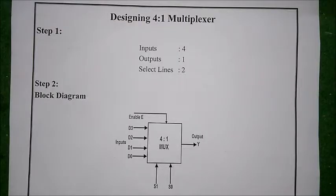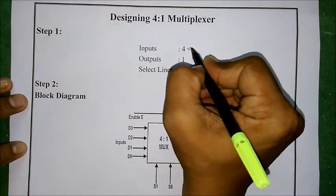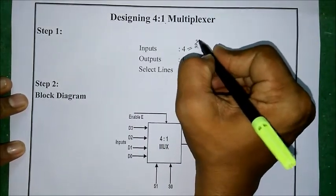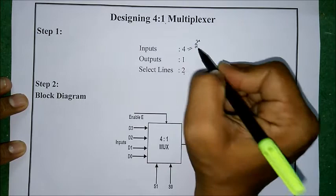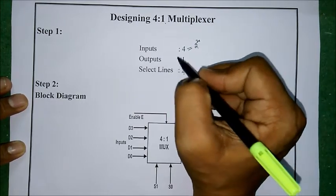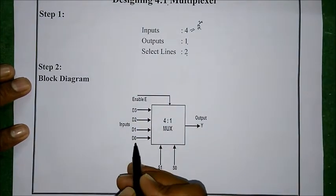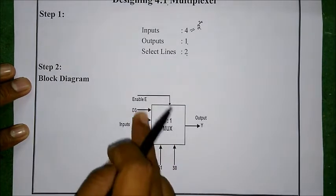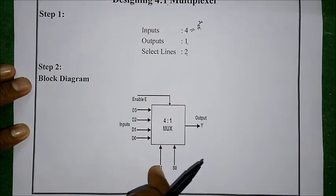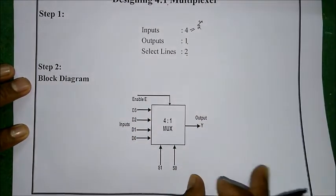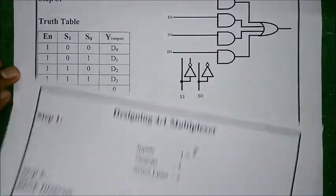Now let us design the 4-to-1 multiplexer. With 4 inputs and 1 output, that is 2^2, there are 2 select lines and 4 input lines and 1 output line. We assign inputs as d0, d1, d2, and d3, with 2 select lines S0 and S1, one output line, and one enable. Now we will draw the truth table.